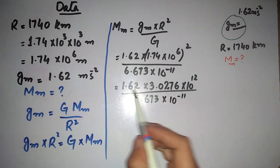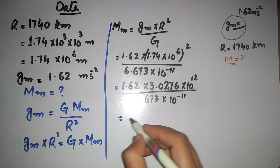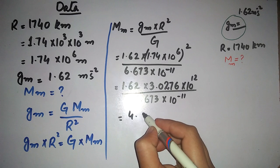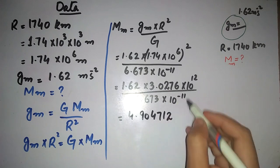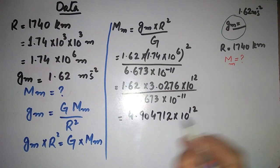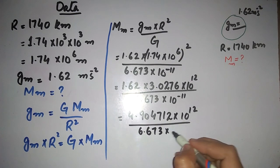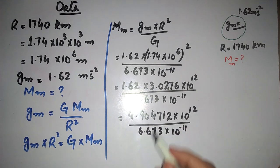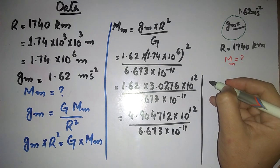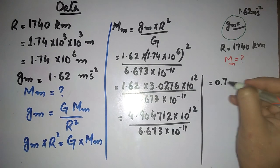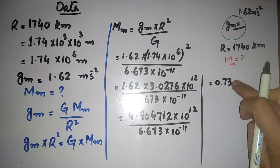We multiply 1.62 by 3.0276, giving 4.904712. Multiply by 10¹². Divide by 6.673 × 10⁻¹¹. The answer is 0.7350 × 10¹² ⁺ ¹¹ = 0.7350 × 10²³.